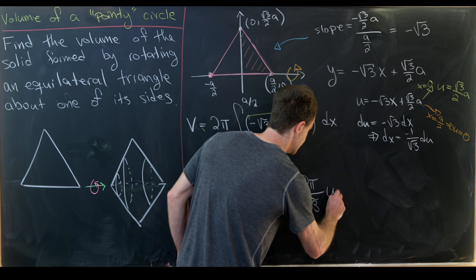Now we can pretty much just finish this thing off. So this is going to be equal to two pi over three root three u cubed evaluated from zero to root three over two times a. Where this three in the denominator came from the power rule increasing this two to three and dividing by the new three.